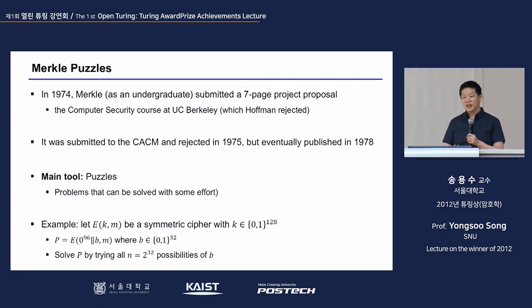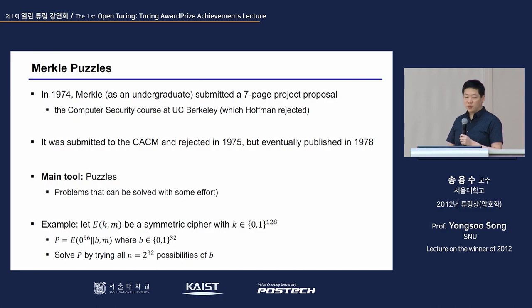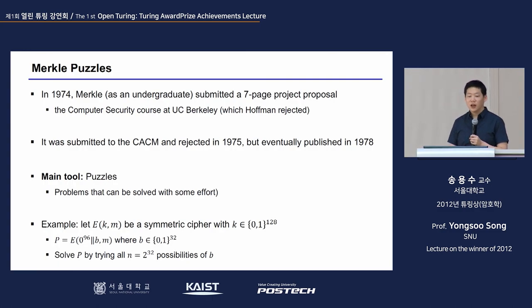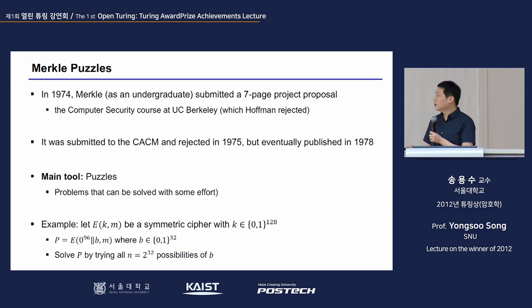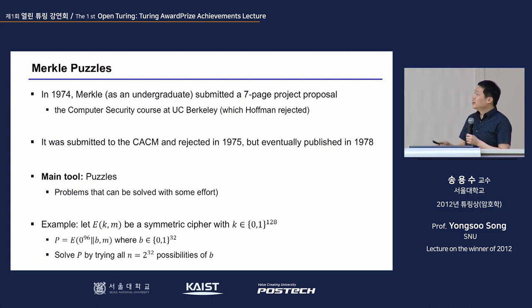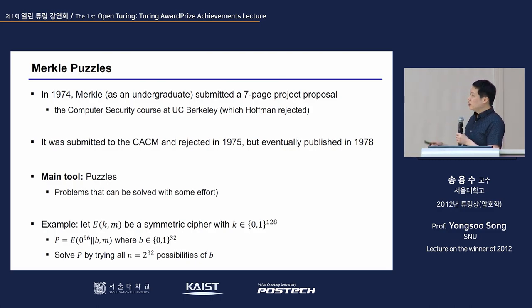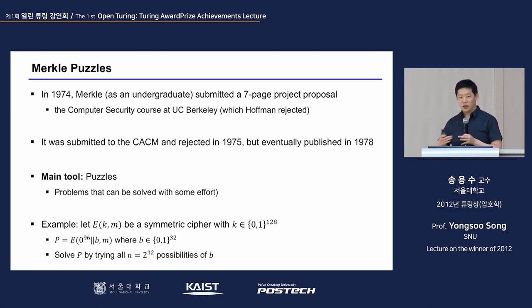In 1974, Merkle — who unfortunately has not won a Turing Award — was an undergraduate student. He took a computer security course at UC Berkeley and submitted a seven-page proposal as homework. His instructor, Professor Hoffman, rejected that paper. Merkle was very disappointed, dropped the course, but continued his research. He submitted the paper to the Communications of the ACM, but it was rejected in 1975. After many submissions and discussions, it was eventually published in 1978.